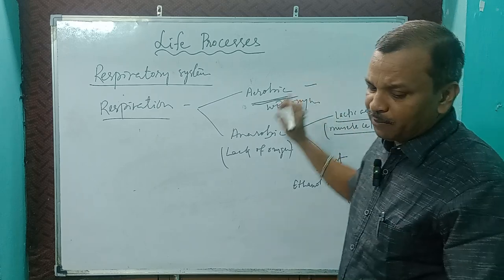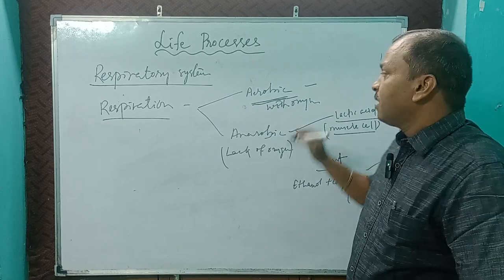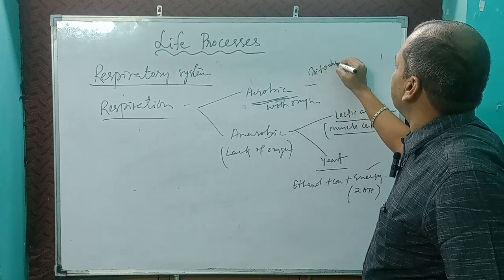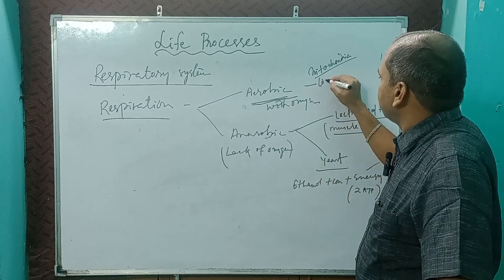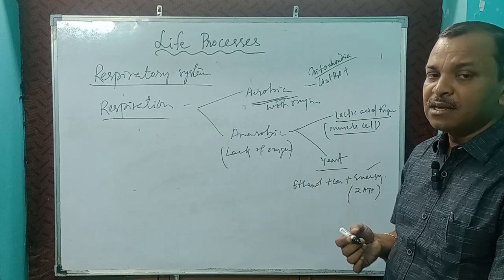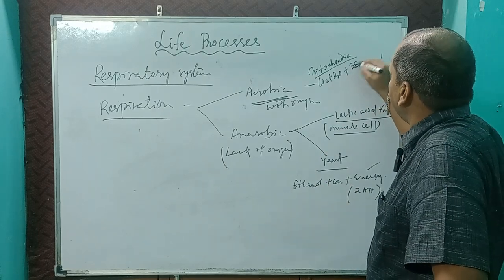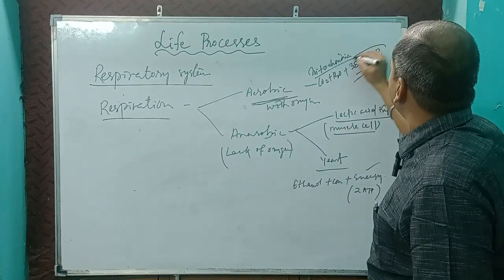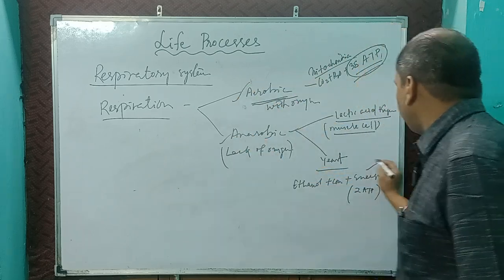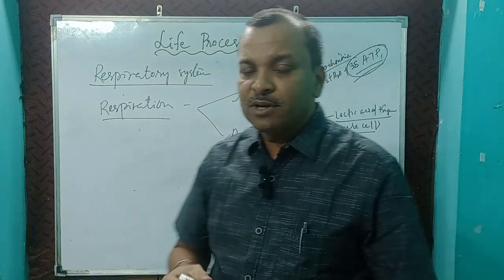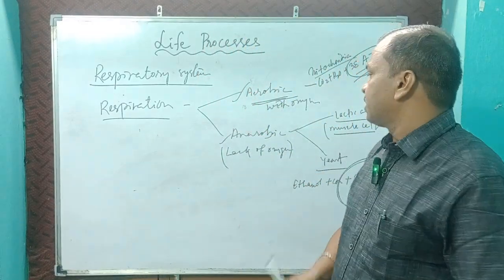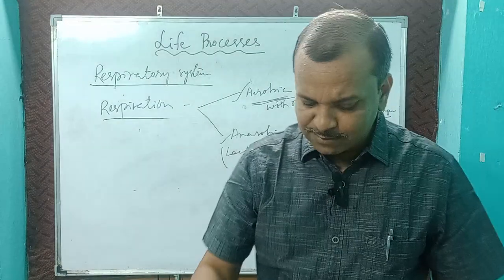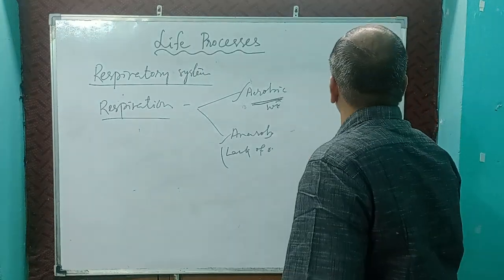In aerobic respiration, which is with oxygen, it occurs in the mitochondria. A huge amount of energy is released: carbon dioxide + water + energy. The amount of energy released is 38 ATP. Remember: 38 ATP in aerobic and only 2 ATP in anaerobic. In the human body, both types of respiration occur, but anaerobic occurs only sometimes.